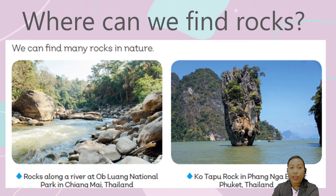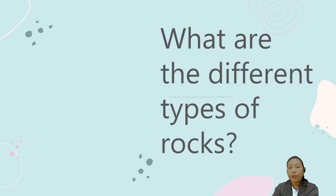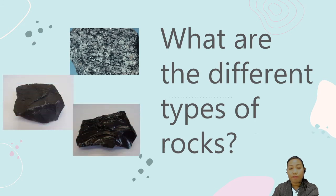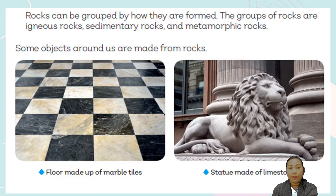We know that we can find rocks in different places, especially in nature. What are the different types of rocks? Rocks can be classified according to how they are formed. The three groups of rocks are igneous, sedimentary rocks, and metamorphic rocks.